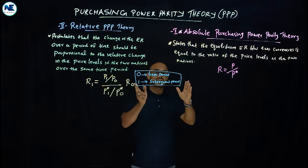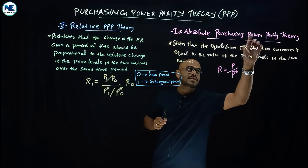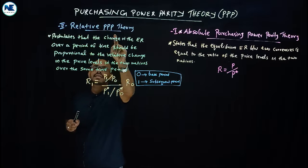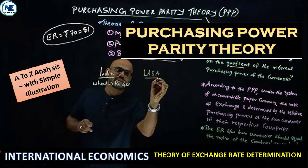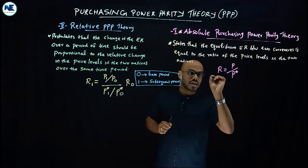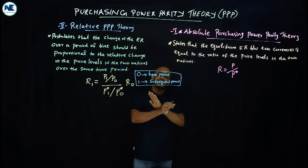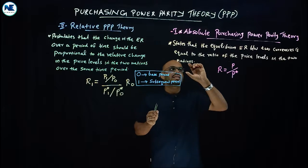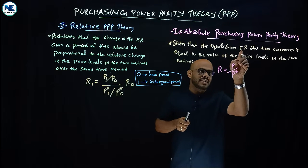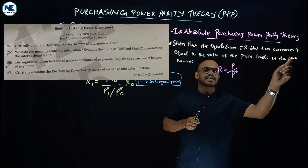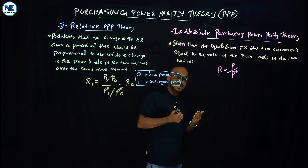Here you can see two versions of purchasing power parity theory. The first version is absolute purchasing power parity theory and the second version is relative purchasing power parity theory. Gustav Cassel, the Swedish economist, introduced this concept. Absolute purchasing power parity theory states or postulates that the equilibrium exchange rate between two currencies is equal to the ratio of the price levels in the two nations.